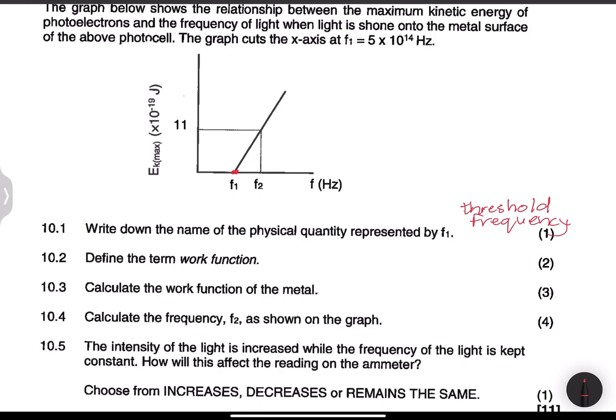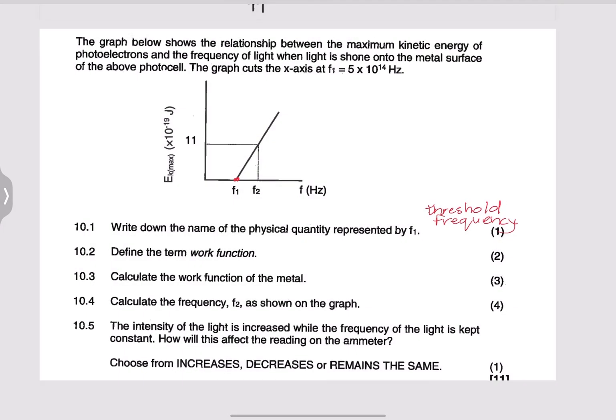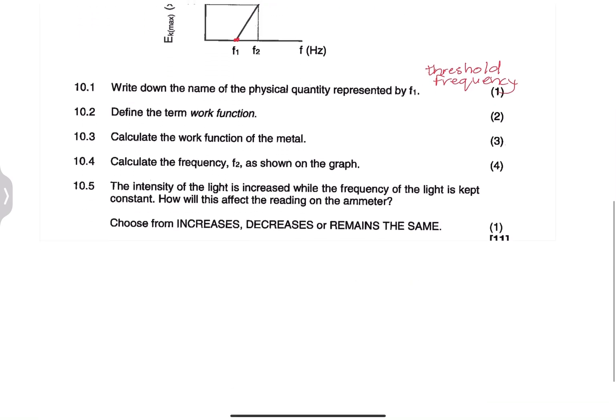So they said define the term work function. So remember this is the minimum energy required to emit electrons from a metal surface. If you allow me ladies and gents, I won't write that down. Of course I'm expecting you to be able to sing it at this point.